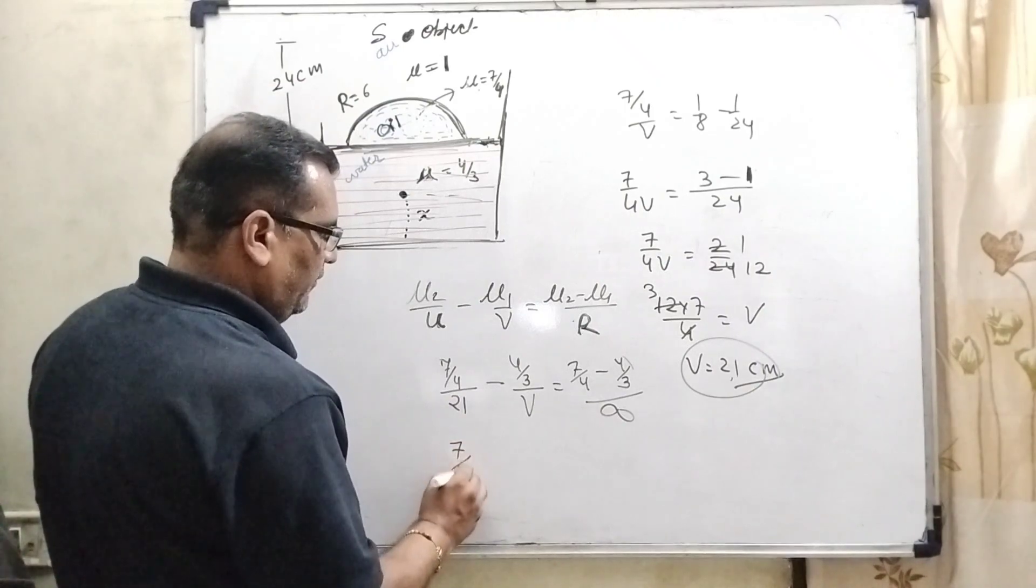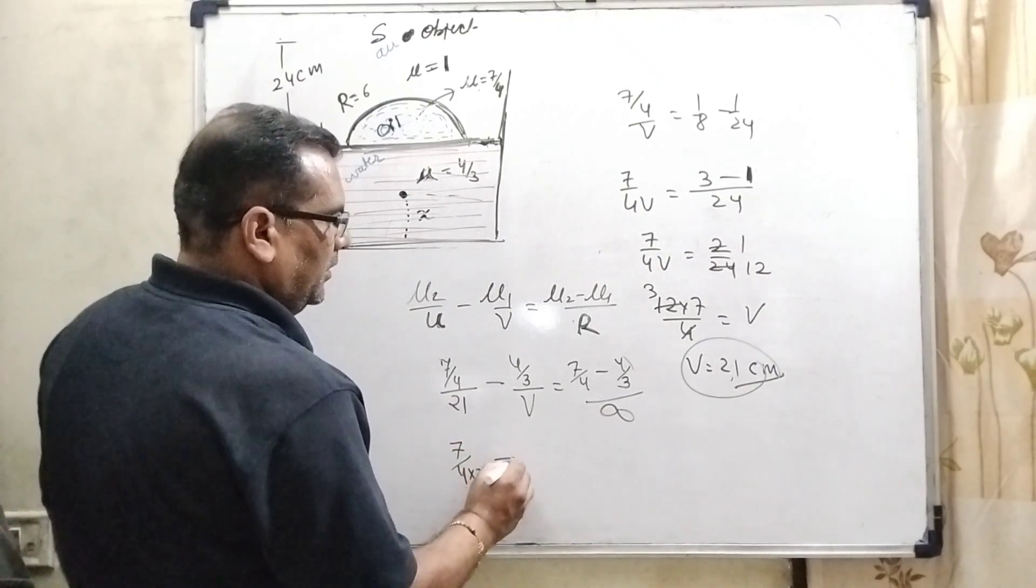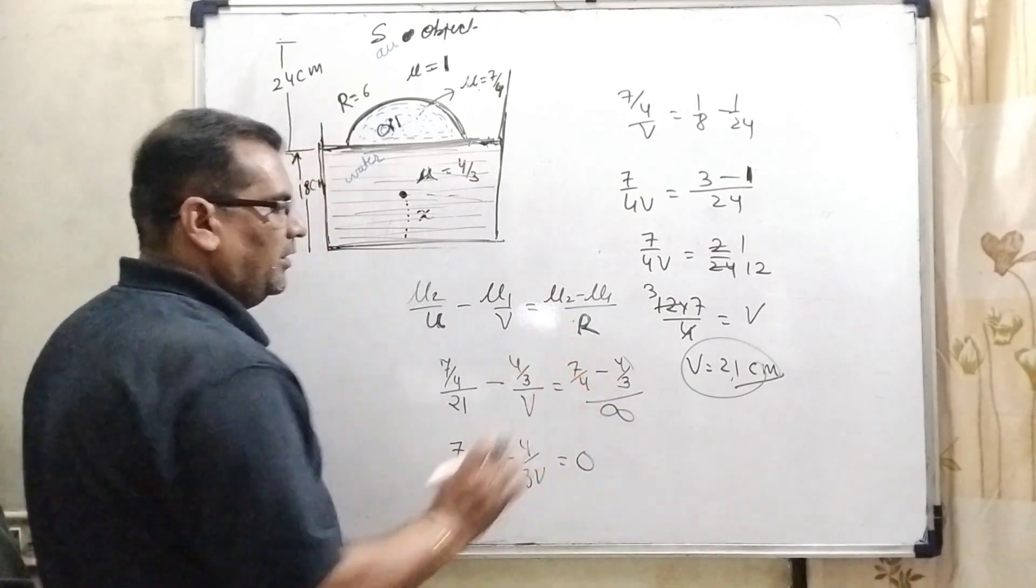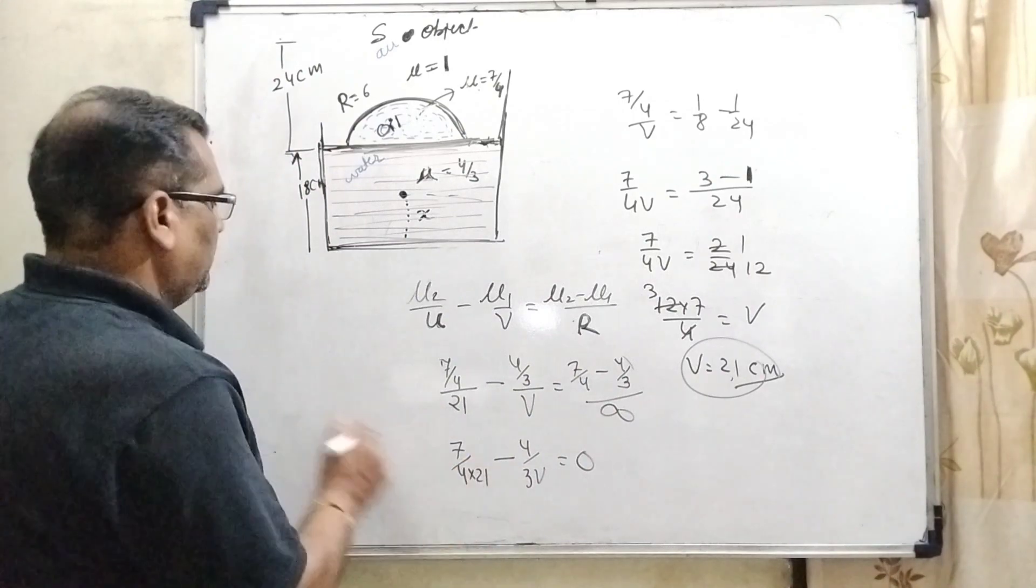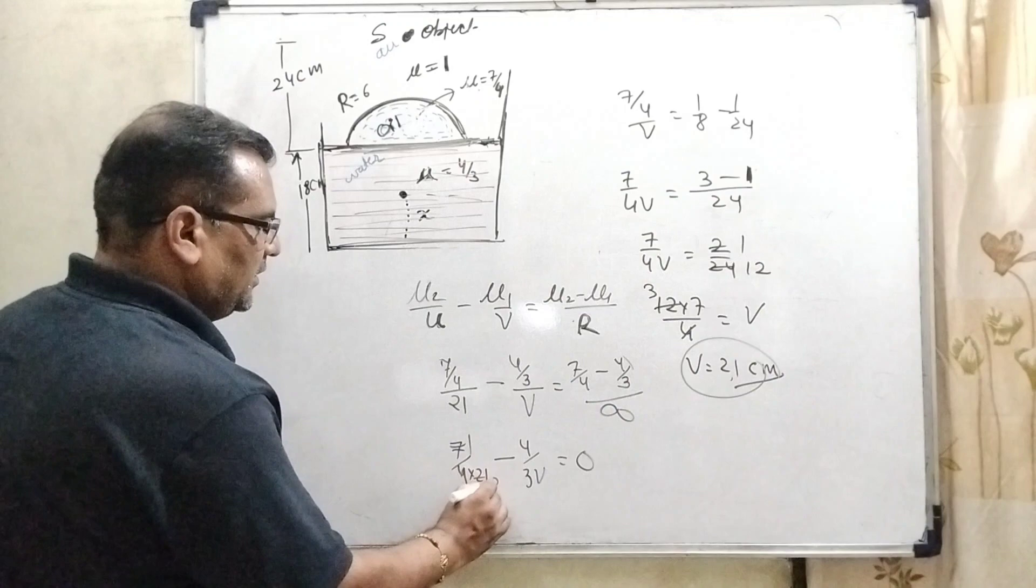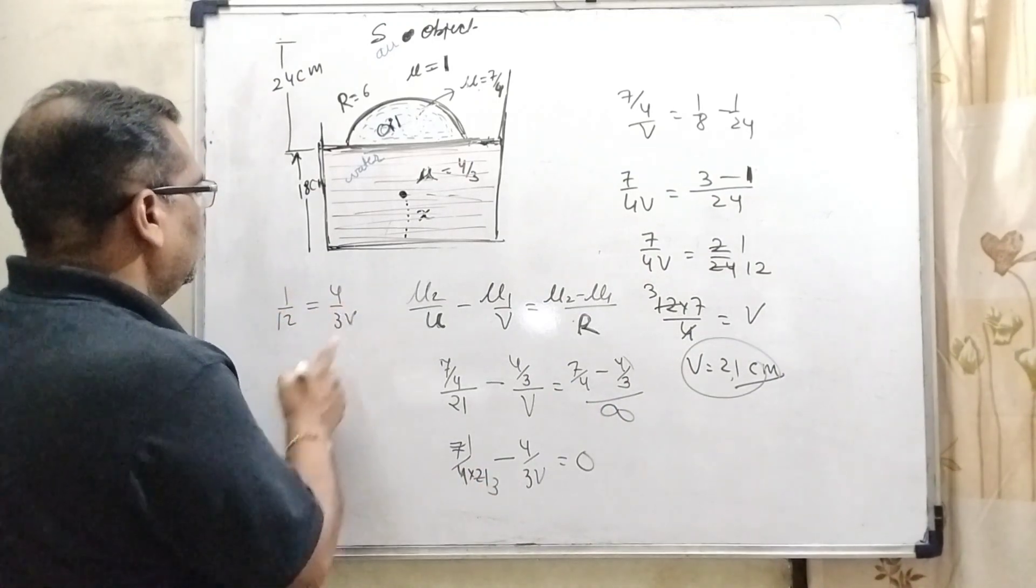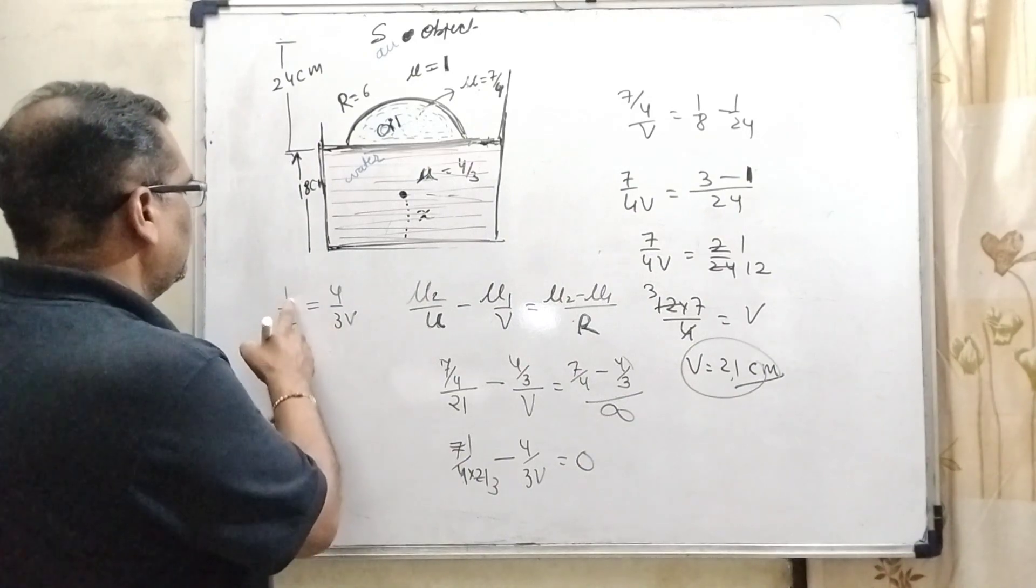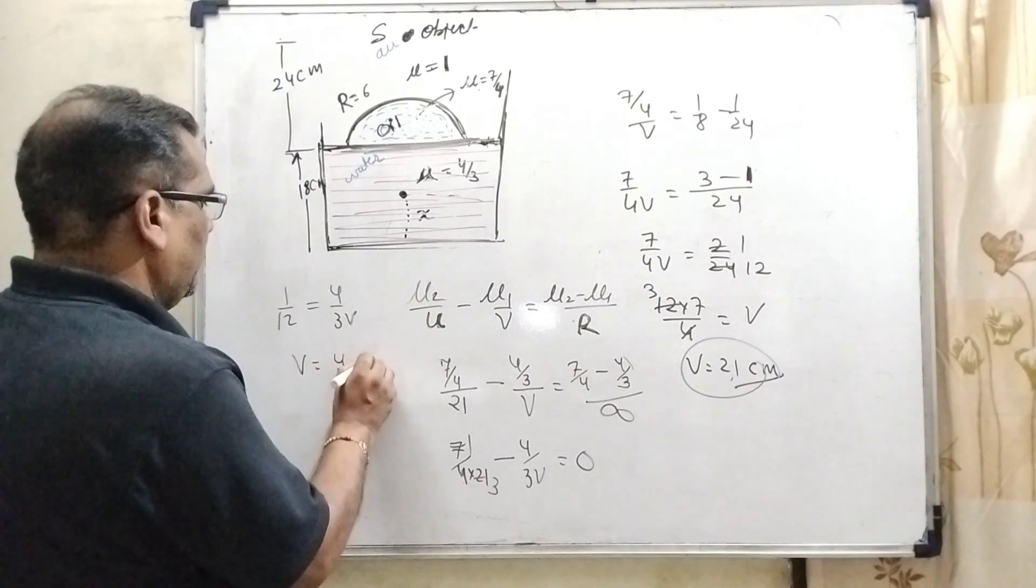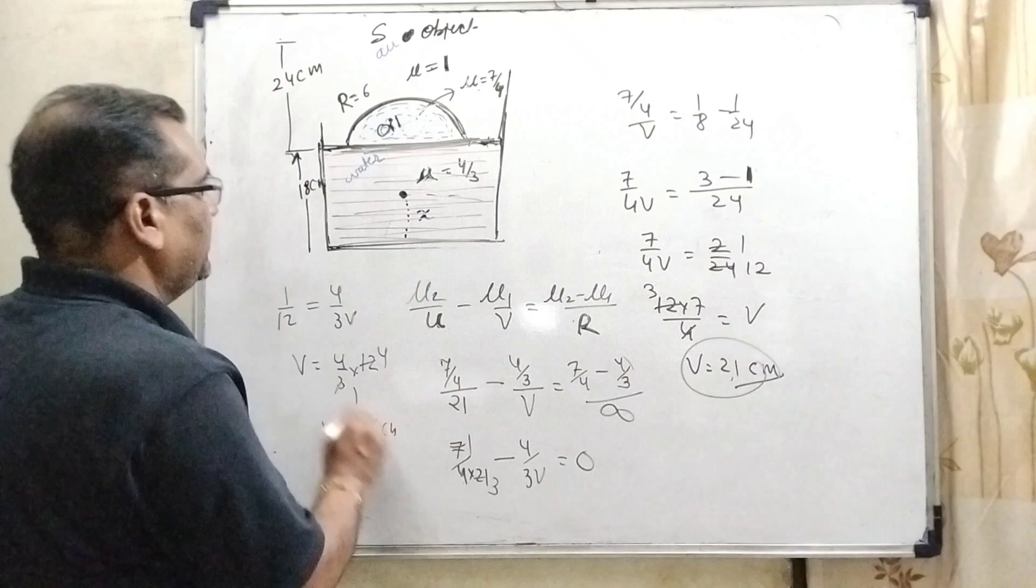So 7 by 4 into 21, 4 by 3 V equal to 0. Something upon infinity equal to 0. Now, this is transposing 4, here 7, 1 is 7, 7 threes are 21. Then 1 by 12 equal to 4 by 3 V. So here V transposing to the left side and 4 by 3 into 12. 3 fours are 12. Then V equal to 16 centimeter.